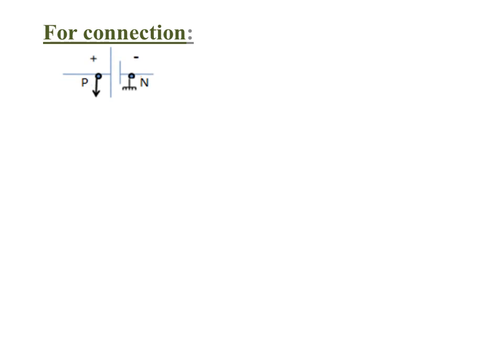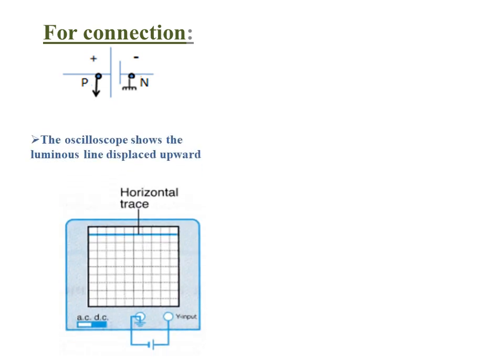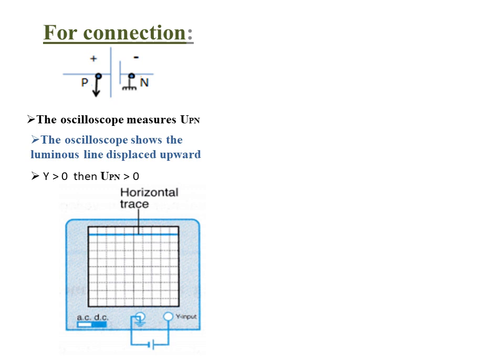For connection, a dry cell has two terminals, positive and negative. The phase terminal of the oscilloscope must be connected toward the positive terminal and the ground must be connected toward the negative terminal. Then the oscilloscope shows a luminous line displaced upward, and the oscilloscope measures U_pn since the phase terminal is connected toward the positive terminal.